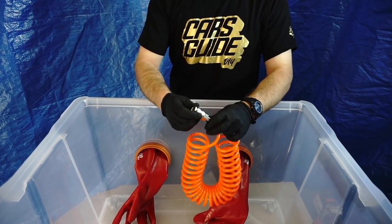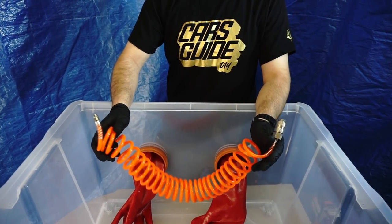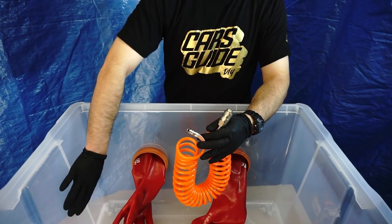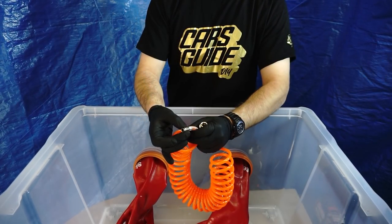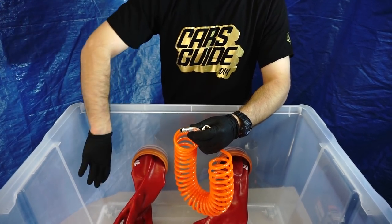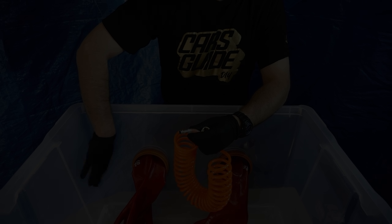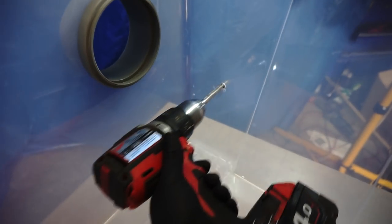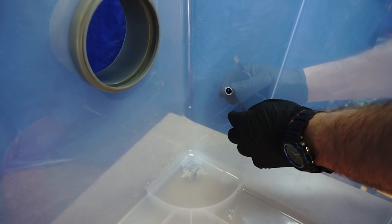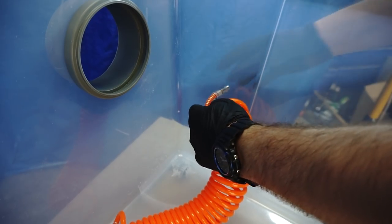It should be mounted on the side in which we will hold the sandblasting gun most of the time. Right-handed on the right, left-handed on the left. Select the right drill according to the diameter of the hose end and use it to make the hole. Smooth the hole surface to not cut the hose. Pull the hose through the hole.